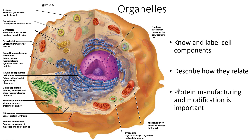The Golgi apparatus refines, packages, and ships macromolecular products, including proteins made in the rough ER. Secretory vesicles come off the Golgi apparatus and secrete proteins to the outside world. Ribosomes are the sites of protein synthesis, found in the cytosol and on the rough ER. The plasma membrane, as mentioned in a previous lecture, surrounds the entire cell and controls what goes in and out. A specialized vesicle known as a lysosome can digest damaged organelles and cellular debris. The mitochondrion produces energy as ATP, and the nucleus is the information center containing the DNA.